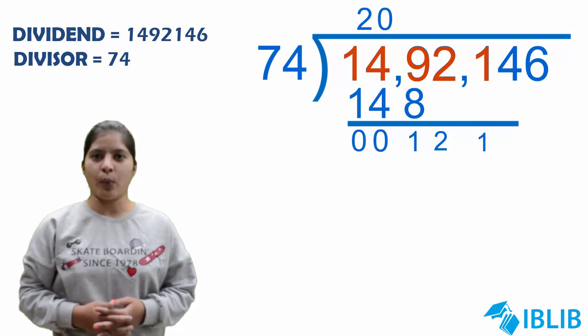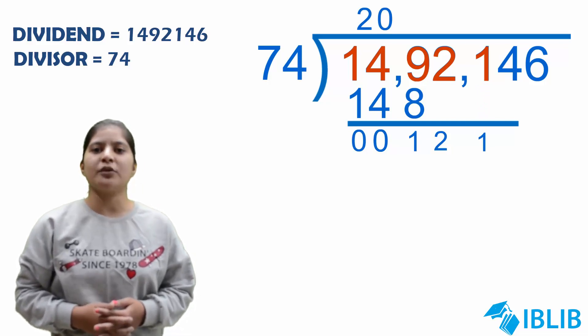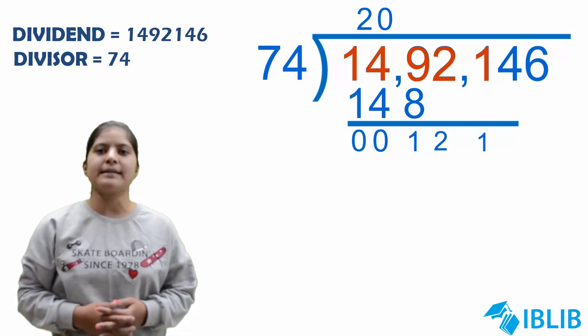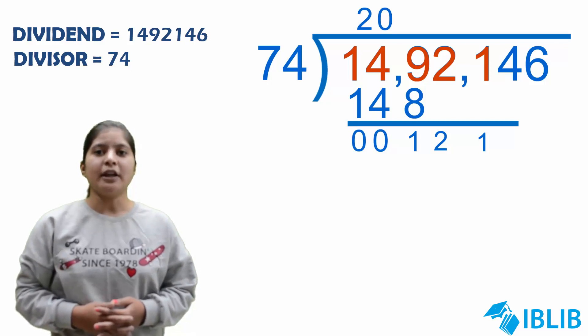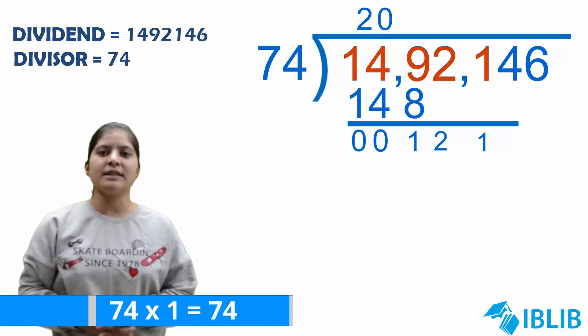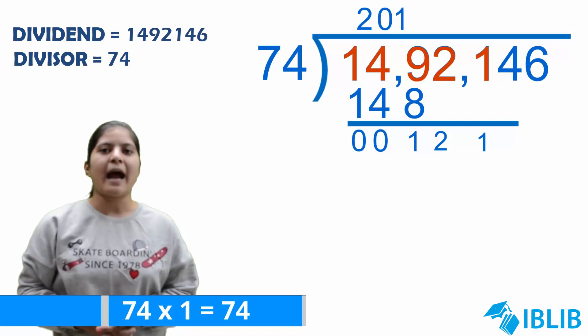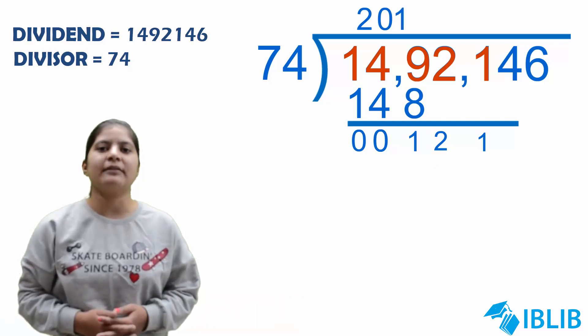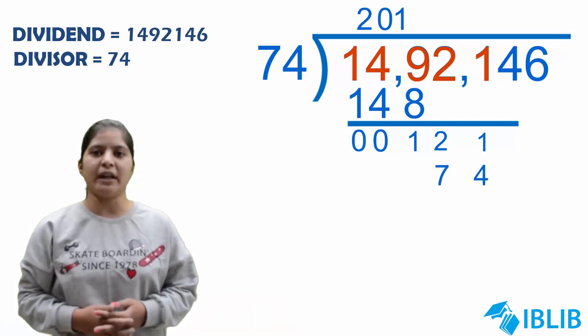We are having 121. It means we have to divide 121 by 74. 74 times 1 will give us 74.